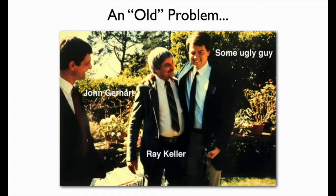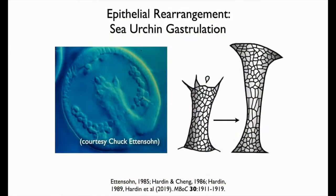When I was in Ray's lab, I worked on sea urchin gastrulation. In sea urchin gastrulation, a short squat cylinder called the archenteron elongates to span the animal-vegetal axis of the embryo. My PhD work focused on showing that convergent extension occurs during this process — as cells change position, they make a tube that is longer but also narrower.